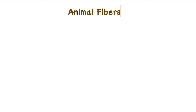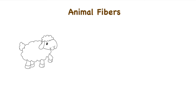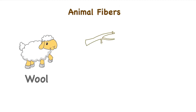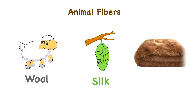Animal fibers are: Wool, which is obtained from sheep; Silk, which is obtained from cocoon of silkworms; and Hair, which is obtained from hair of different animals. The structural composition of all the animal fibers are protein-based.